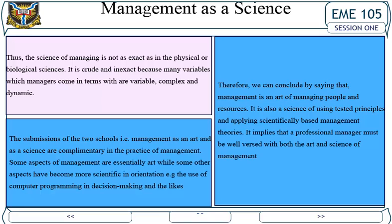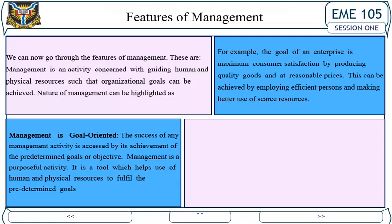Features of management. Management is an activity concerned with guiding human and physical resources such that organizational goals can be achieved. Management is goal-oriented — the success of any management activity is assessed by its achievement of predetermined goals or objectives. Management is a purposeful activity — it is a tool that helps use human and physical resources to fulfill predetermined goals. For example, the goal of an enterprise may be maximum consumer satisfaction by producing quality goods at reasonable prices, achieved by employing efficient persons and making better use of scarce resources.